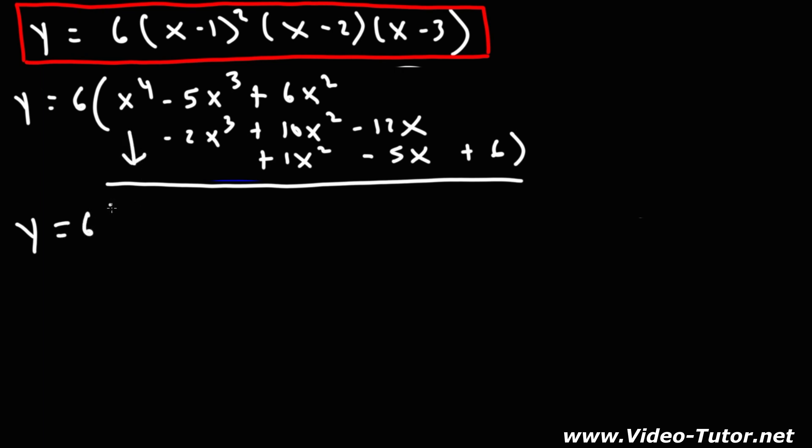So we can bring this down, negative 5 plus negative 2 is negative 7. 6 plus 10 plus 1 is 17. Negative 12 minus 5 is also 17 but negative.